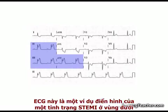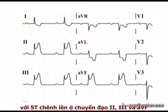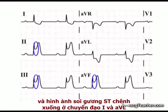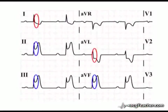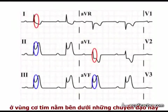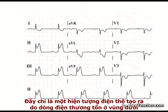This ECG demonstrates the classical pattern of inferior ST elevation MI, with ST elevation in leads 2, 3, and AVF, and reciprocal ST depression in leads 1 and AVL. In this example, reciprocal change in leads 1 and AVL does not indicate disease in the region under these leads — it is purely an electrical phenomenon produced by injury current in the inferior region.